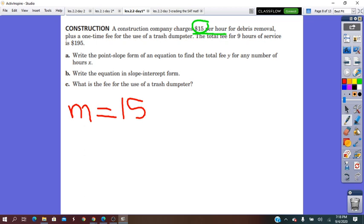Charge is $15 per hour for debris removal. Plus, so in this sentence, it's about the charge. We can write charge is $15 per hour times each hour. They tell us plus a one-time fee for the use of the trash dumpers. So, do we know this fee? We do not know it. Then, I'm going to use F from fee variable.